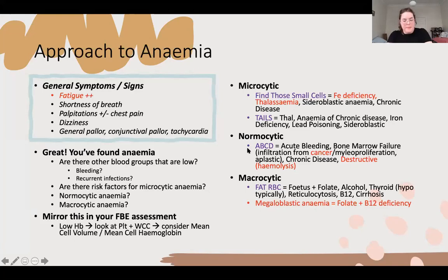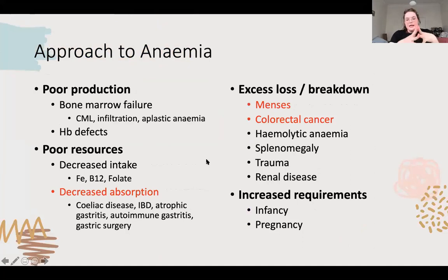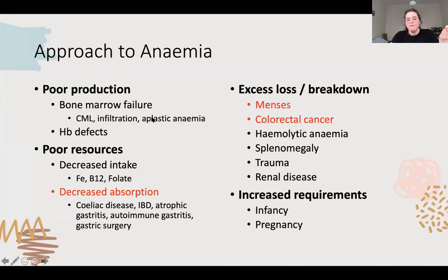Having a nice structure for what you can ask in an OSCE is really important. Think about poor production - even though you've got everything you need, your bone marrow is just not having a bar of it - such as aplastic anaemia or infiltration from cancer. Or poor resources: bad diet, or even though you're taking it in, you can't absorb it - all of your gastrointestinal conditions.